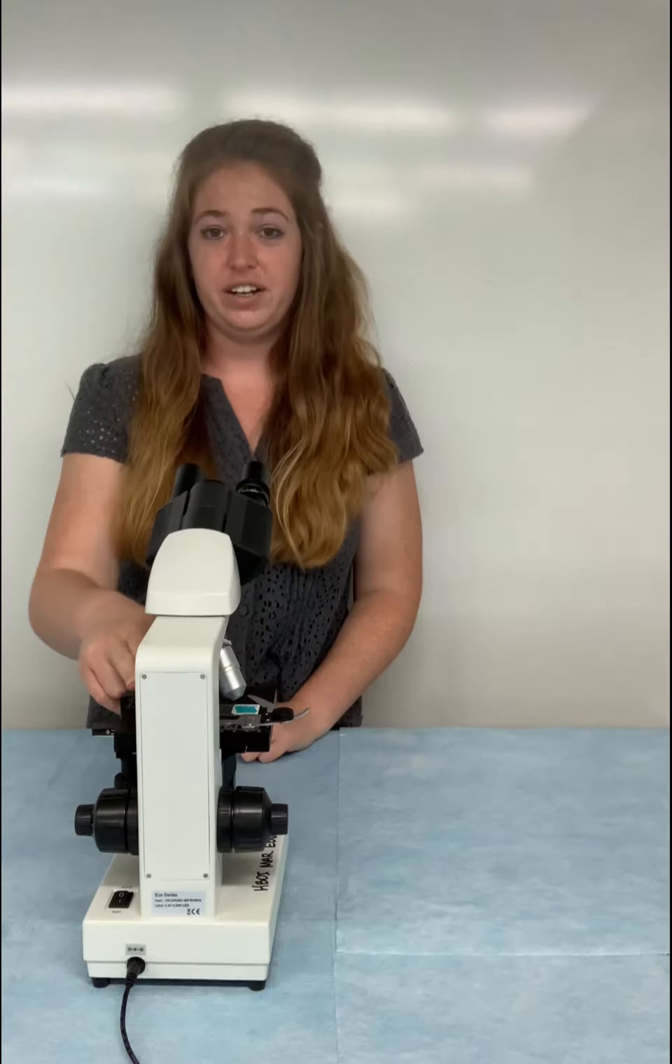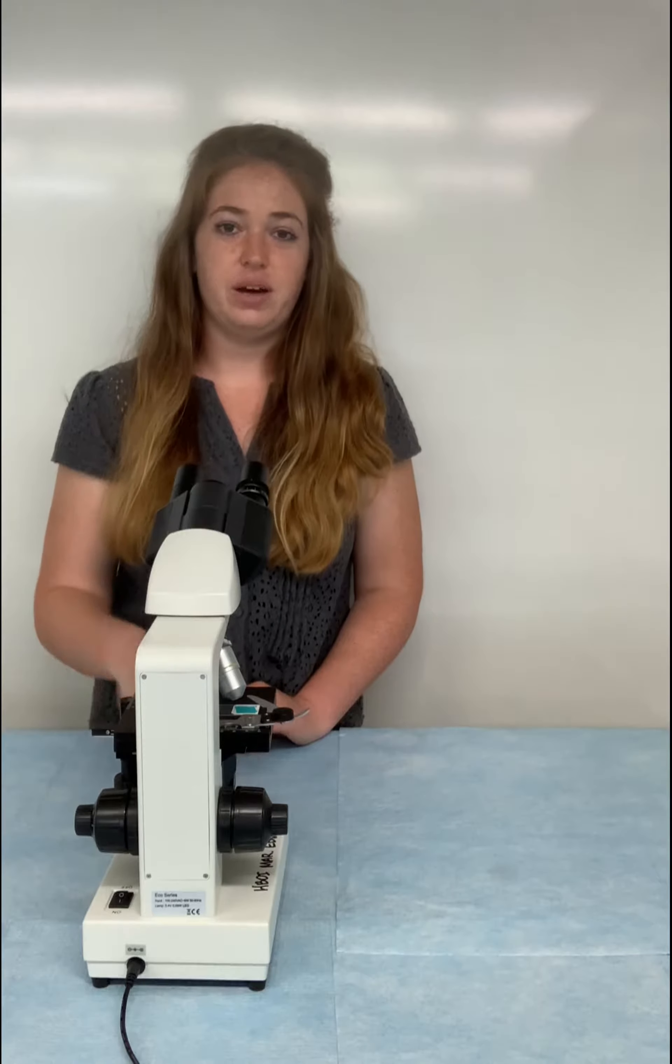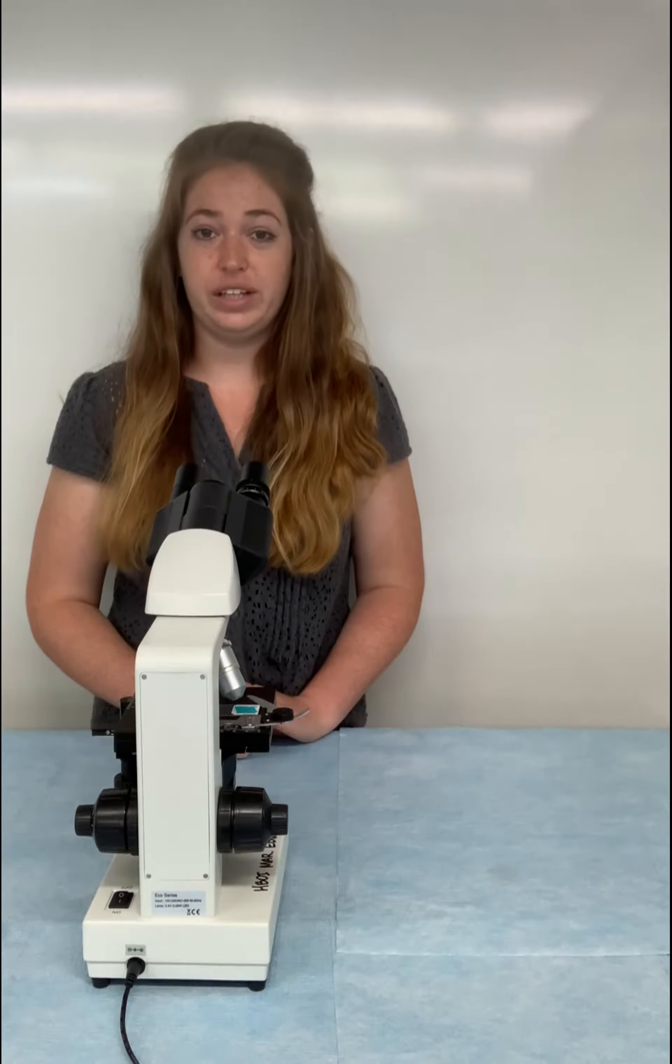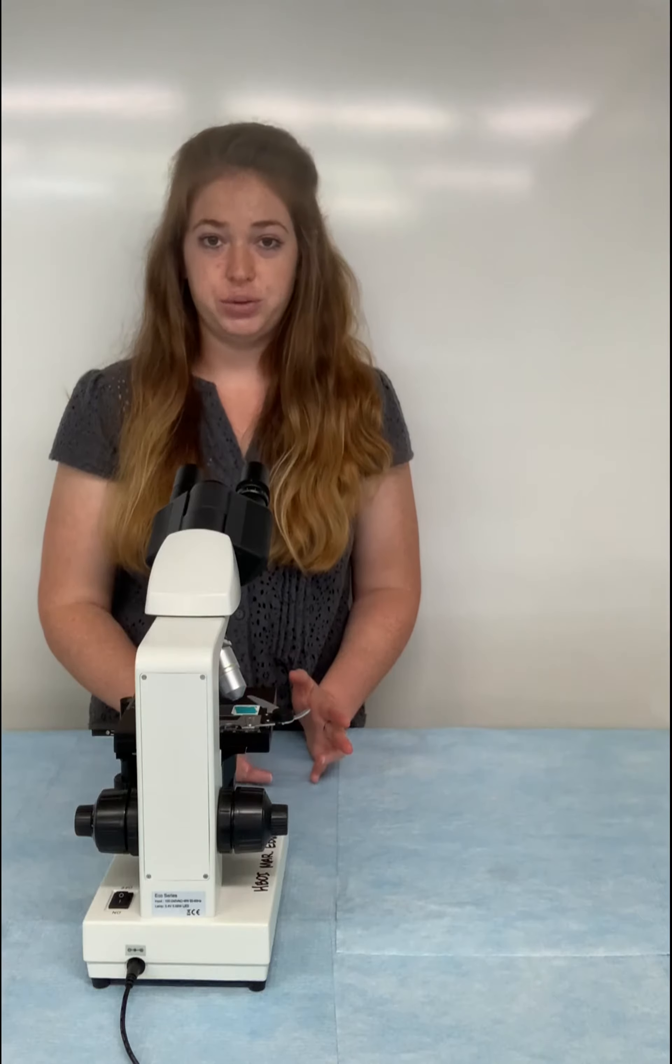Now we see our specimen up much closer. This last objective here I'm not going to switch to right now. This objective is actually used with oil and the oil basically acts as a bridge between the objective and the slide itself. So everything is all connected together. This gives you a really high power magnification and you can see your specimen up really close. But for right now hopefully this helps you see all the different parts of the microscope, what they do, and how to adjust them.